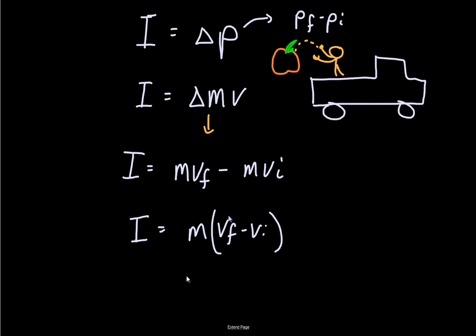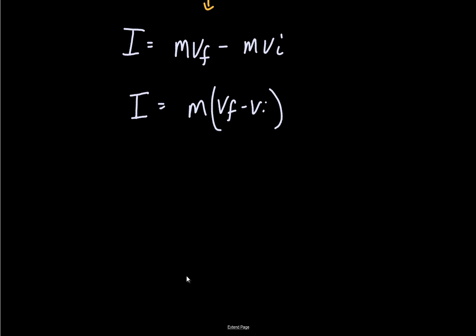So here's a question: what changes the velocity of a mass? What's the only way to change the velocity of something with mass? You have to accelerate it. So that must mean in order to have an impulse, a force must be applied. Somewhere in this scenario, force needs to come into the picture. Newton sorted this out: if you apply a net force to an object for some amount of time, you are going to change its momentum.